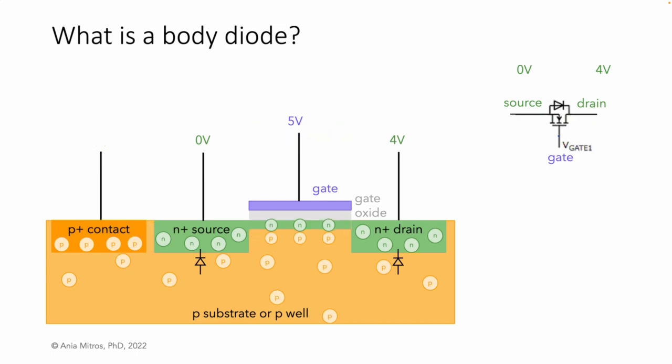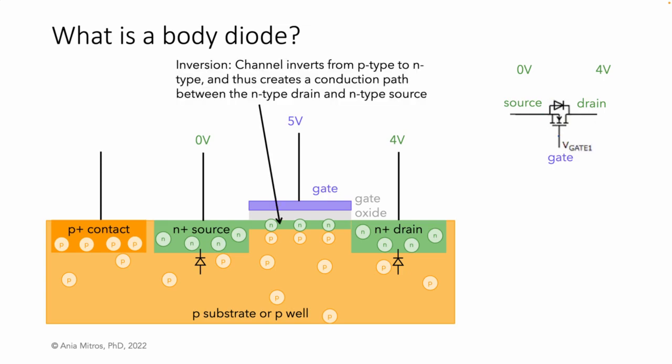Indeed, to turn on the FET, we apply such a large voltage that we cause what's called inversion. We push away so many positive charge carriers that we create a channel of negative charge carriers. Now, current can flow.